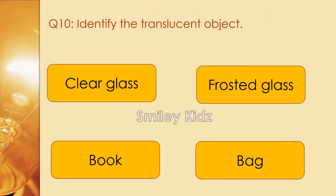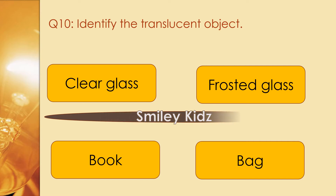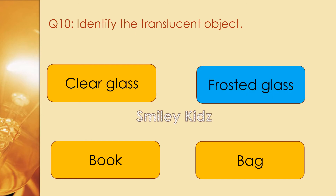Question number 10. Identify the translucent object. Options are clear glass, frosted glass, book, and mug. The right answer is frosted glass. Frosted glass is the translucent object.